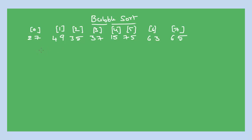Bubble sort means the bubbling of two adjacent elements. Let us see how it works. First, compare the 27th element with the 49th element, that is a[0] with a[1]. Our aim is ascending order, which means lower values to higher values.